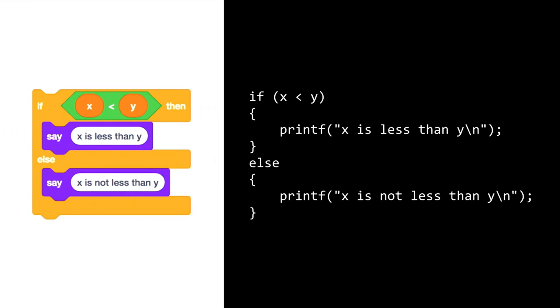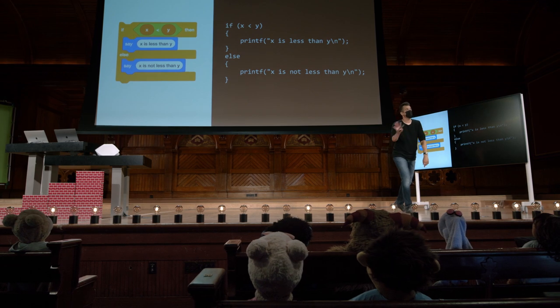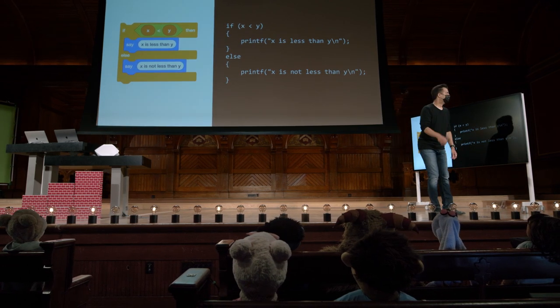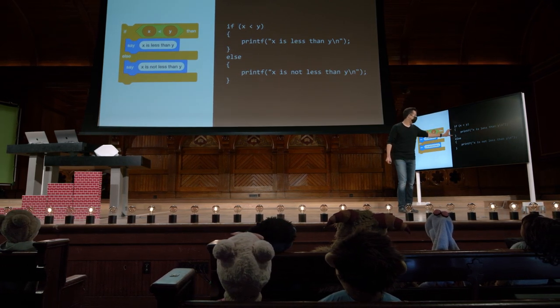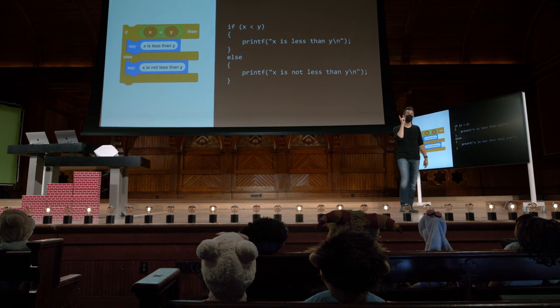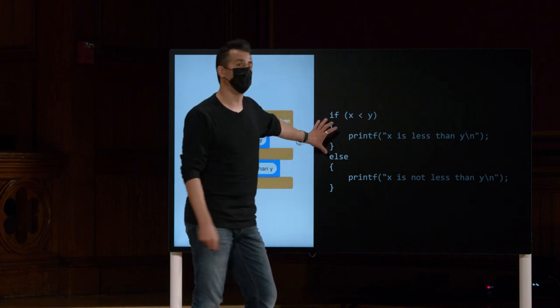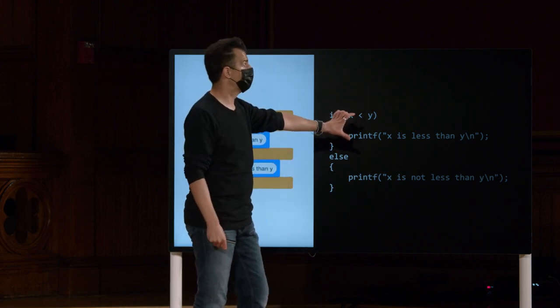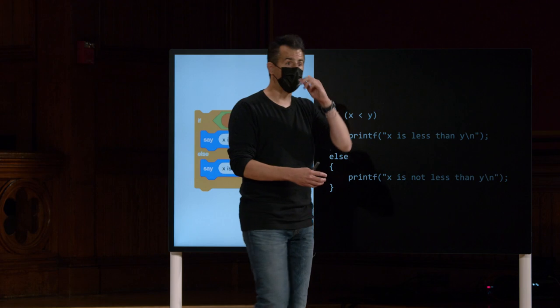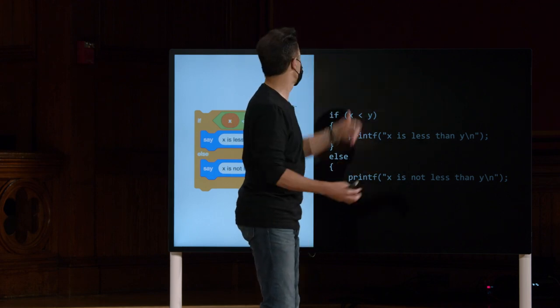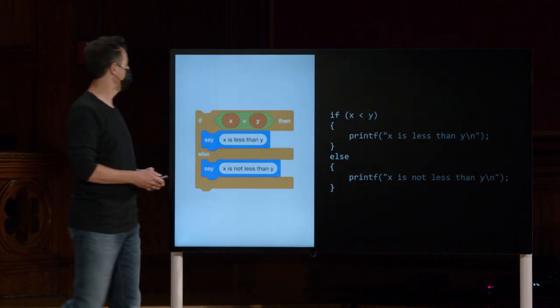Mas adiciona, é claro, a palavra else e, em seguida, mais algumas chaves. Vale notar que, em C, não é estritamente necessário ter chaves se você tiver apenas uma linha de código recuada abaixo. Na prática, é recomendado fazer isso de qualquer maneira, para deixar super claro para você e, finalmente, para qualquer outra pessoa que leia seu código, que você pretende que apenas uma ou mais linhas de código sejam executadas.